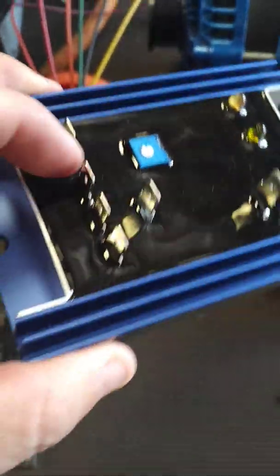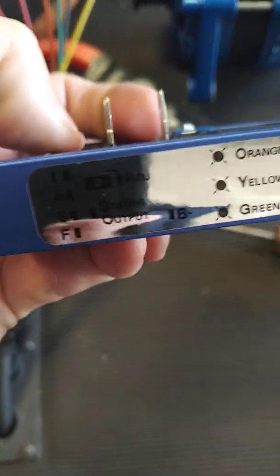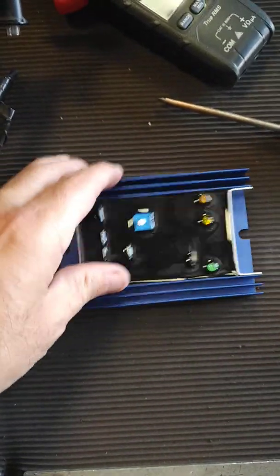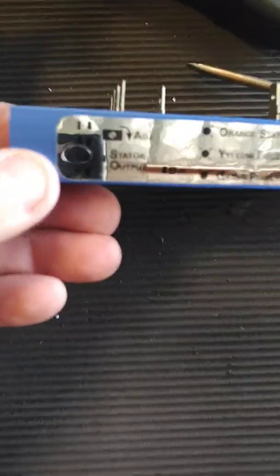You'll notice there's four tabs on the front, and here's your explanations, but we'll go through them anyways. Starting with the first one here, F, that's your field, shown here on the side.